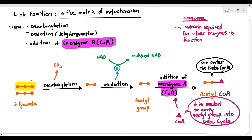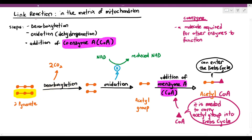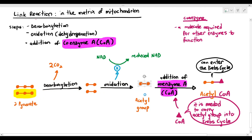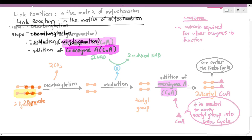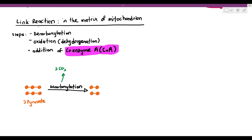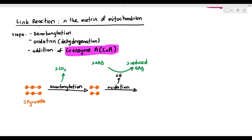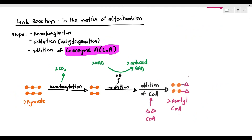Remember, there were two pyruvate molecules. So two pyruvates will undergo decarboxylation to give you two carbon dioxide molecules, and undergo oxidation to give you two reduced NAD, and the addition of coenzyme A to give you two acetyl-CoA. The summary: pyruvate undergoes decarboxylation, undergoes oxidation, and is combined with coenzyme A to become acetyl-CoA. That's all we need to know for the link reaction.